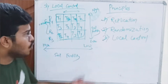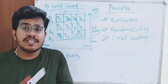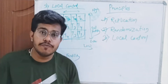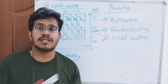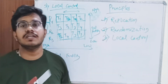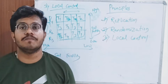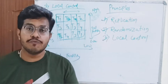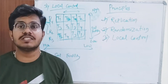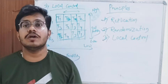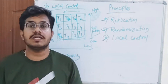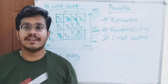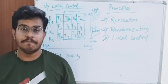All three principles — Replication, Randomization, and Local Control — help us understand that a field experiment must follow them to fulfill its objectives. While conducting a field experiment, we must ensure our objectives are fulfilled by following all these standard principles, so that we get a successful experimental output. This is all about the class — keep liking, sharing, and subscribe to the channel. Thank you for watching.